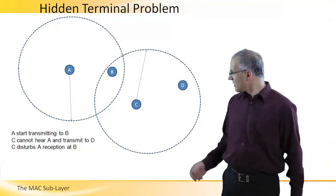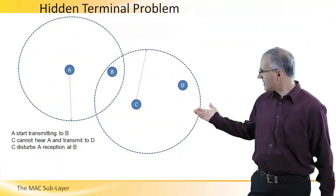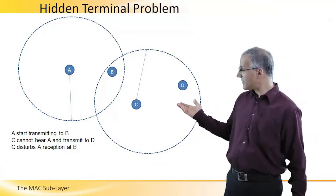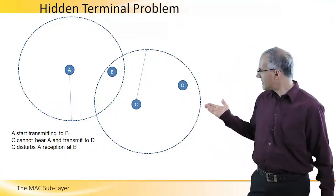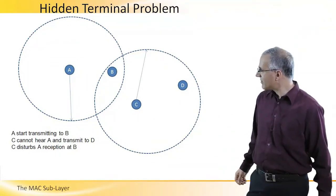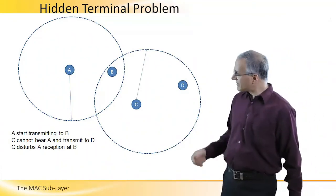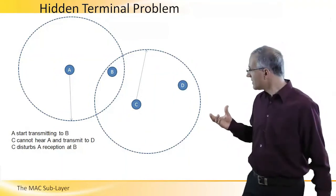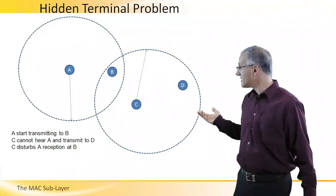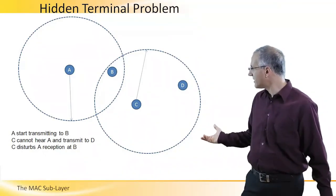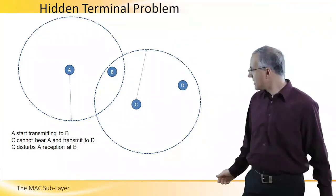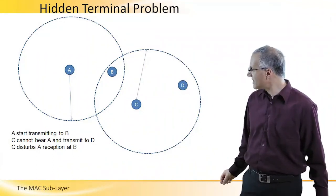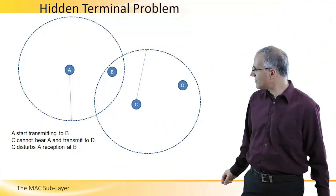Next, we're going to discuss the hidden terminal problem. I plotted here four stations, A, B, C and D, and A and C, both A and C want to transmit, and what you see here is their transmission radius. So, A wants to transmit to B, and B is within its transmission radius. C wants to transmit to D, and it is also within its transmission radius. So is B. However, A and C cannot hear each other. What happens is that suppose that A senses the channel, sees that it is not occupied and starts transmission to B. Now C comes in, senses the channel, since it cannot hear A, it sees that it is clear and starts transmitting to D. What's going to happen is that B would not be able to understand A's transmission because C acts as a noise which disturbs reception. This is called the hidden terminal problem, and the next operation mode of 802.11 tried to solve this problem.